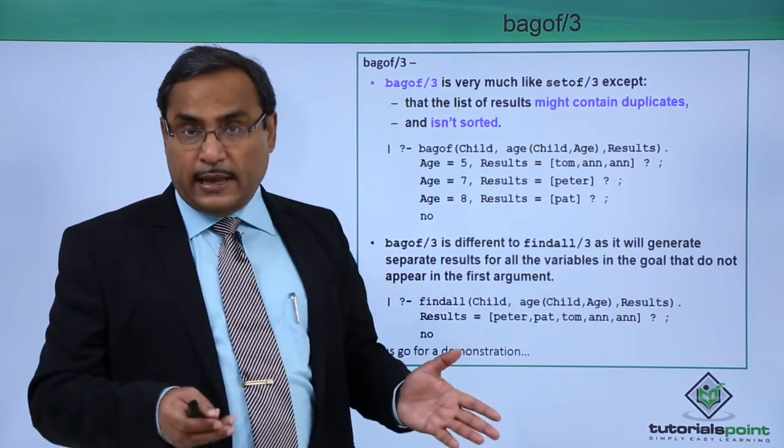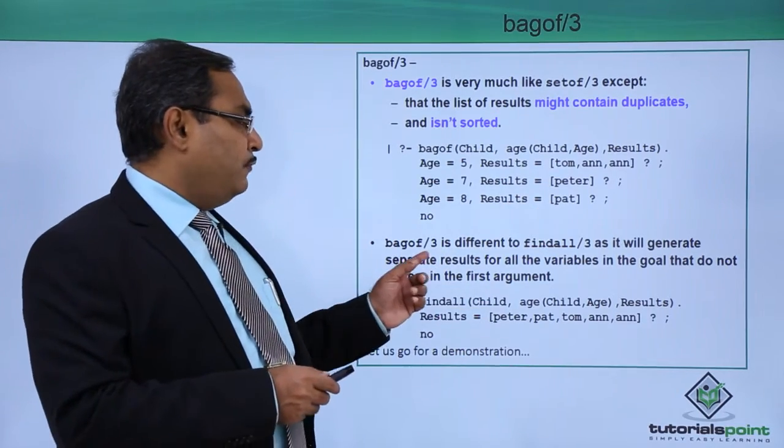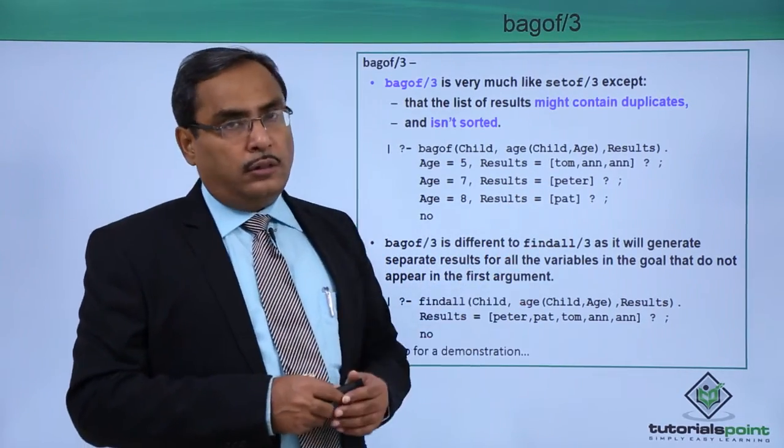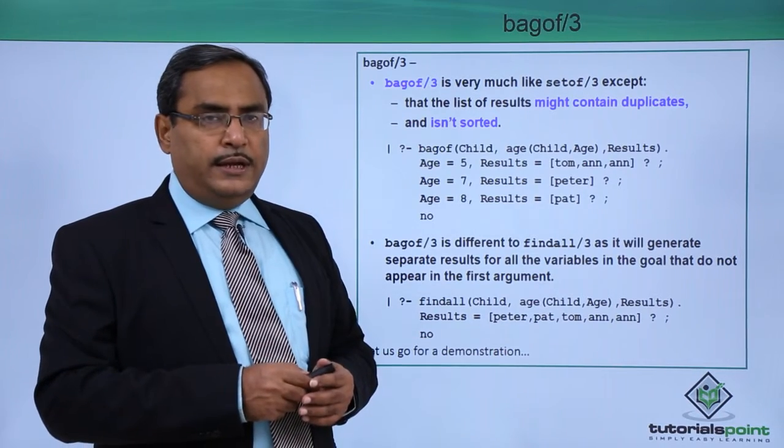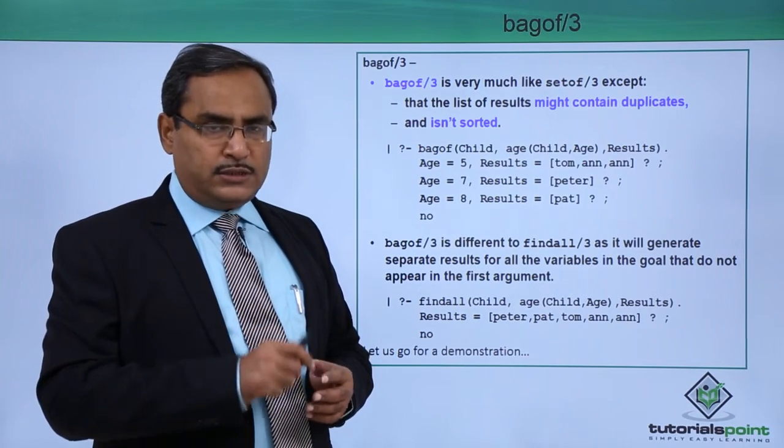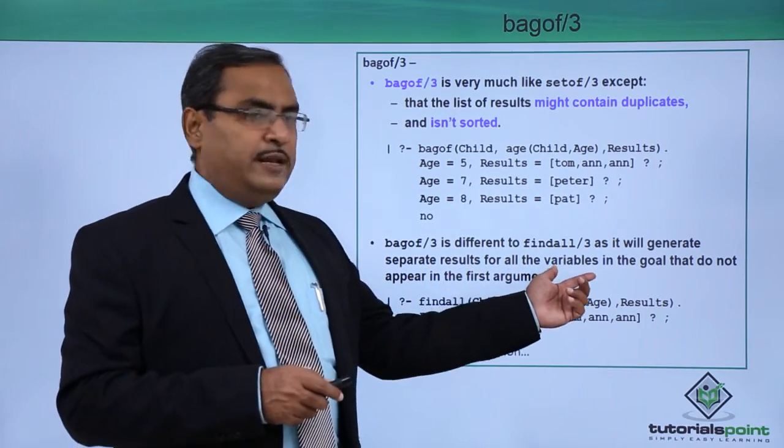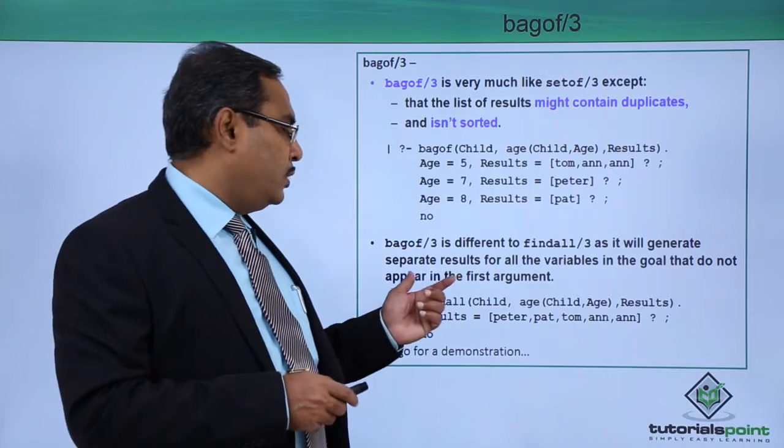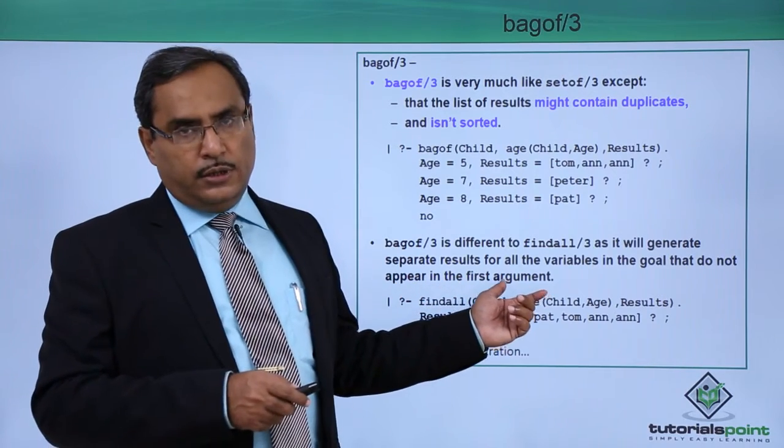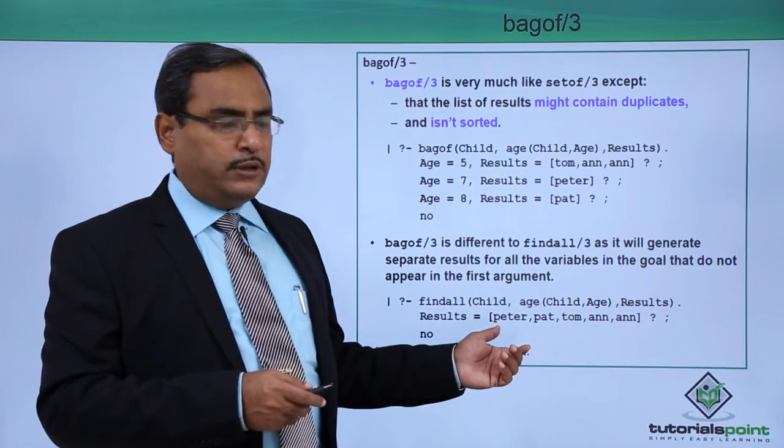That is why the outputs will be coming like this one. Bagof is different to findall, and findall is also having 3 arguments. Findall/3 as it will generate separate results for all the variables in the goal that do not appear in the first argument. For the better understanding let us go for the example.